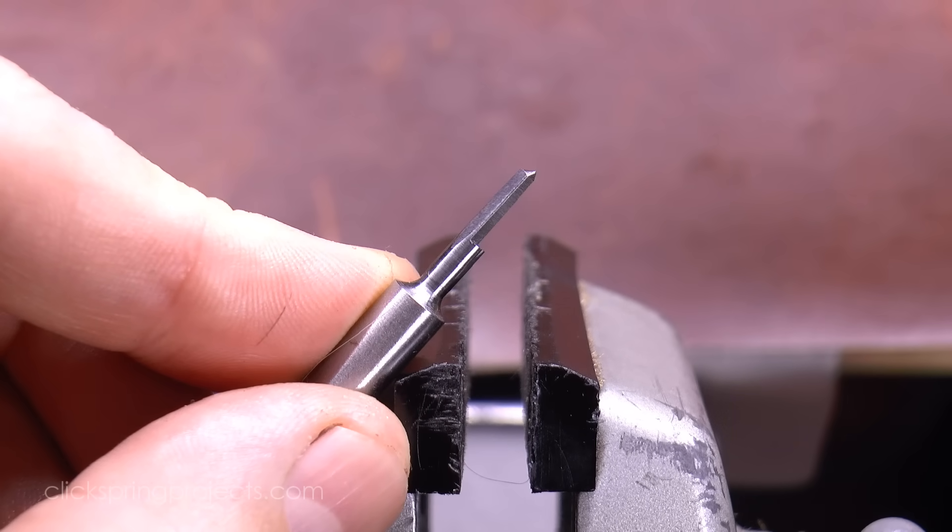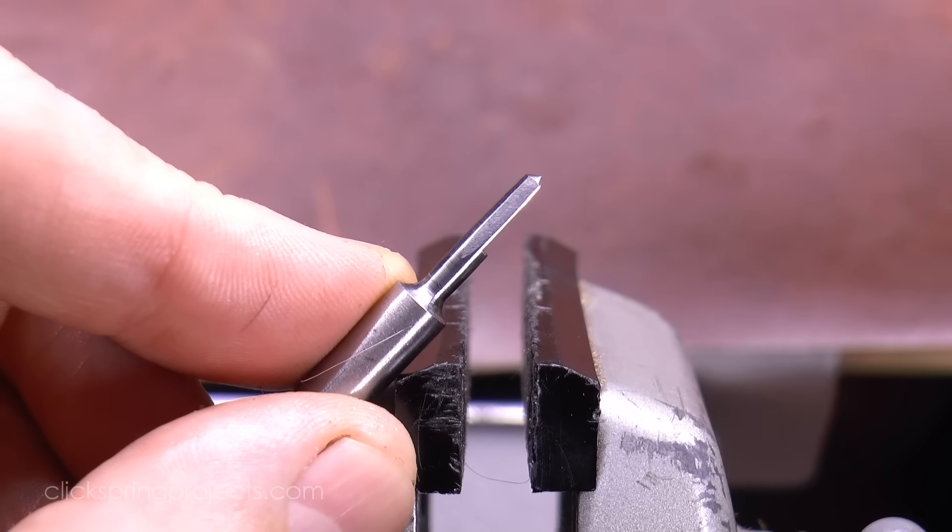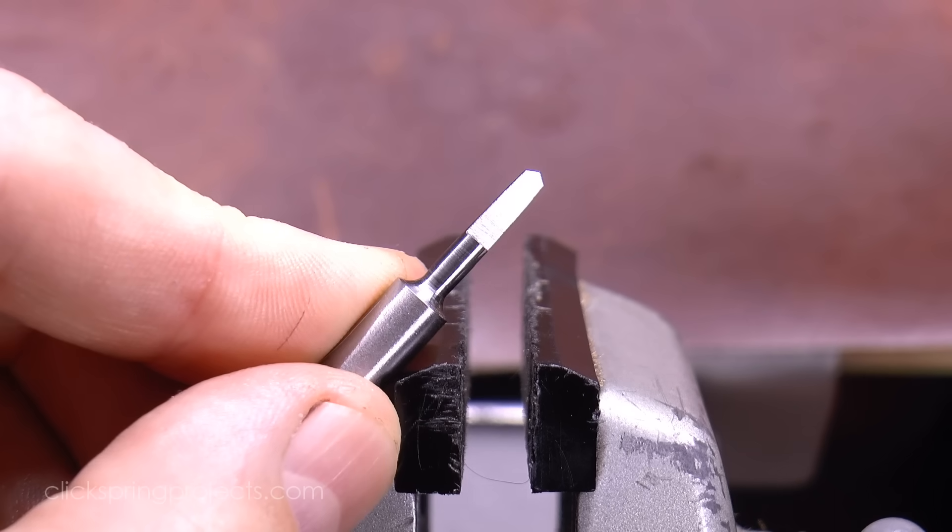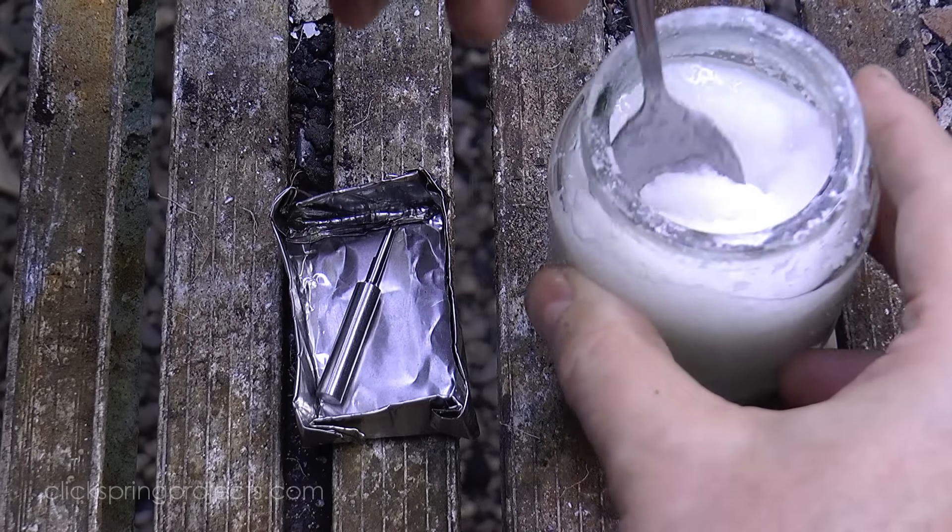With the basic features in place and the critical dimensions very slightly oversize, the cutter can now be taken to a red heat with a torch, quenched, and then tempered to a medium straw.